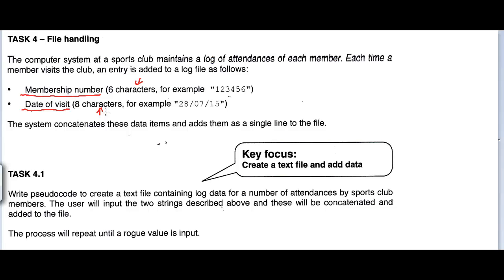Some sort of validation will be required. When the user gives an input for the membership number, our code should check whether it is six characters long. When the user inputs the date of visit, our code should check whether the date entered is eight characters long. Finally, these two items are going to be concatenated — joined together — and written into the file as a single line of data.